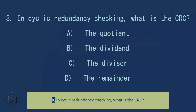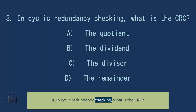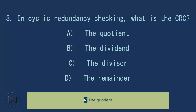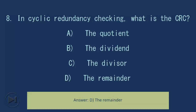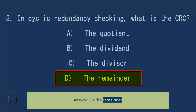Answer: A, addition and subtraction. Question 8: In cyclic redundancy checking, what is the CRC? A) the quotient, B) the dividend, C) the divisor, D) the remainder. Answer: D, the remainder.